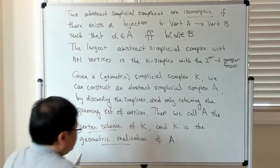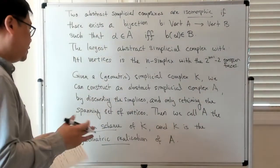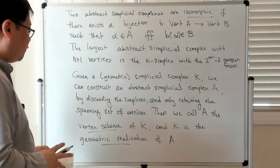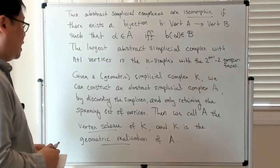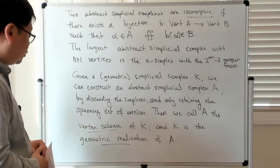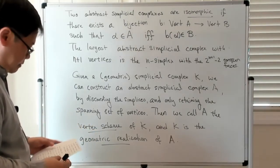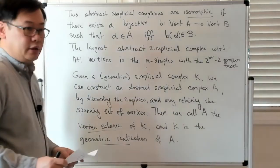You might ask whether it's easy to construct geometric realizations, and it turns out that if you have a high enough dimensional space, a high enough embedding space, then you can always trivially construct a geometric realization of an abstract simplicial complex. Let me just stop here for now and we'll continue.